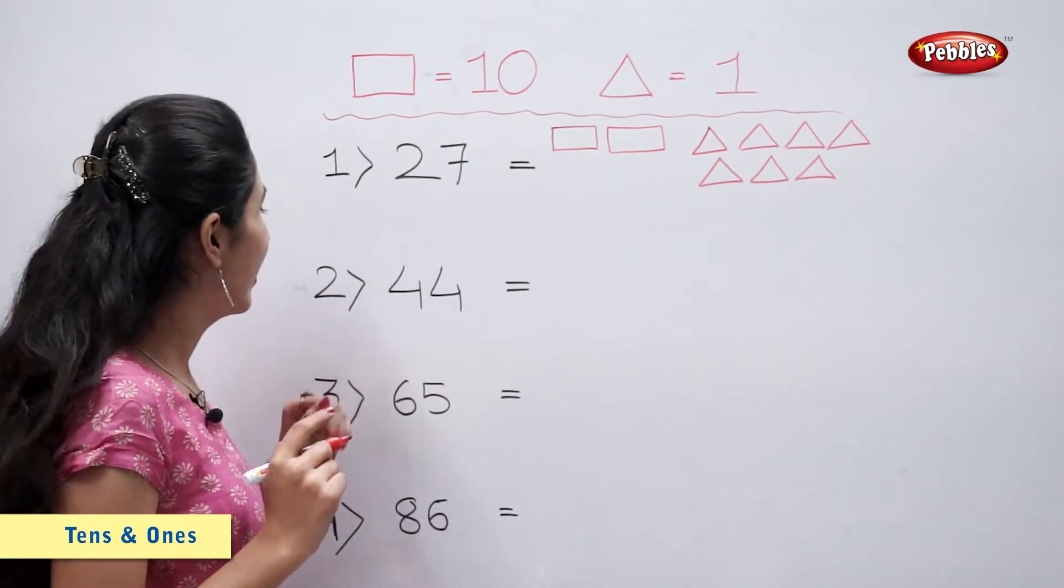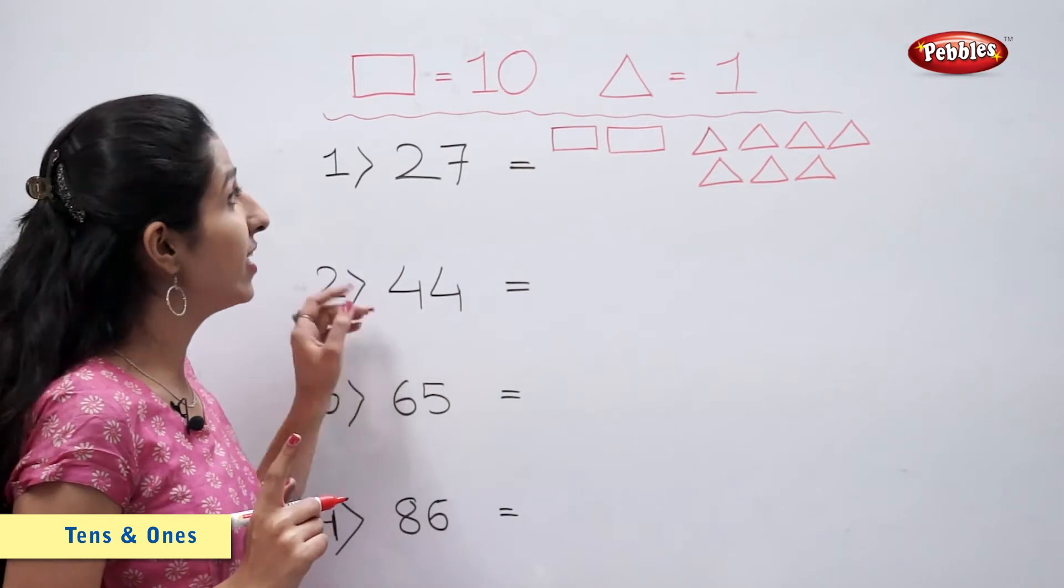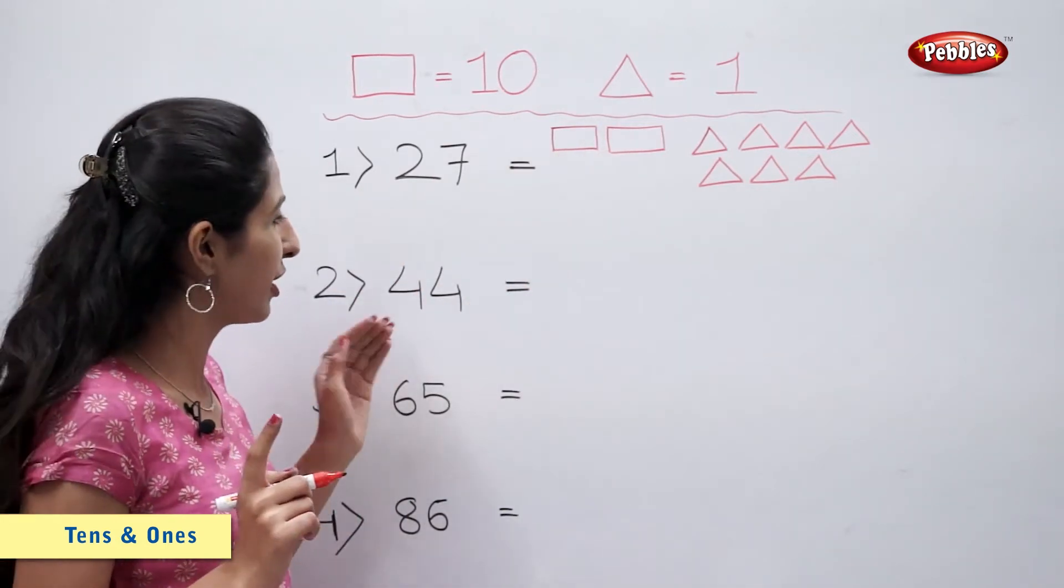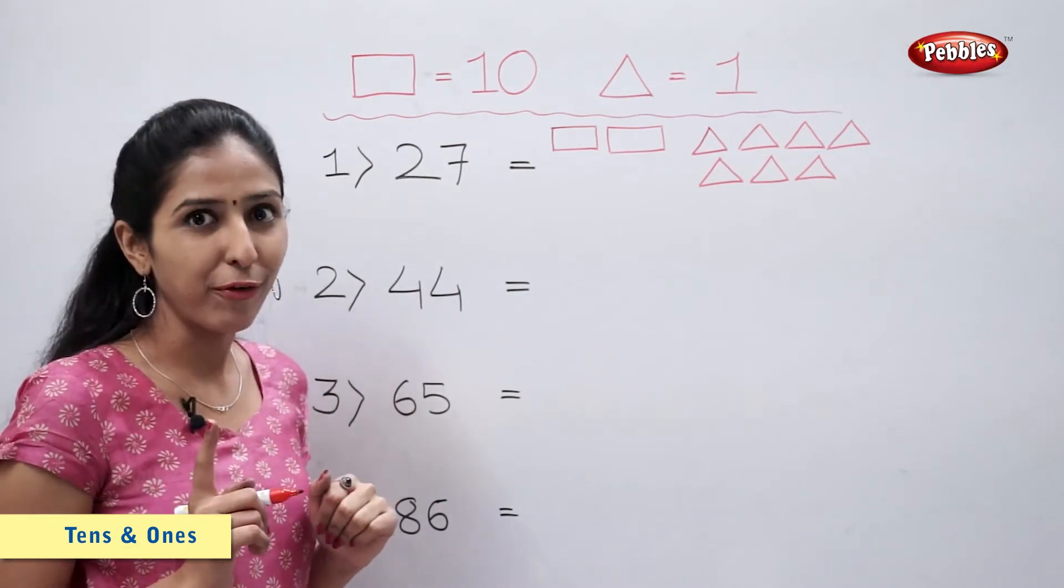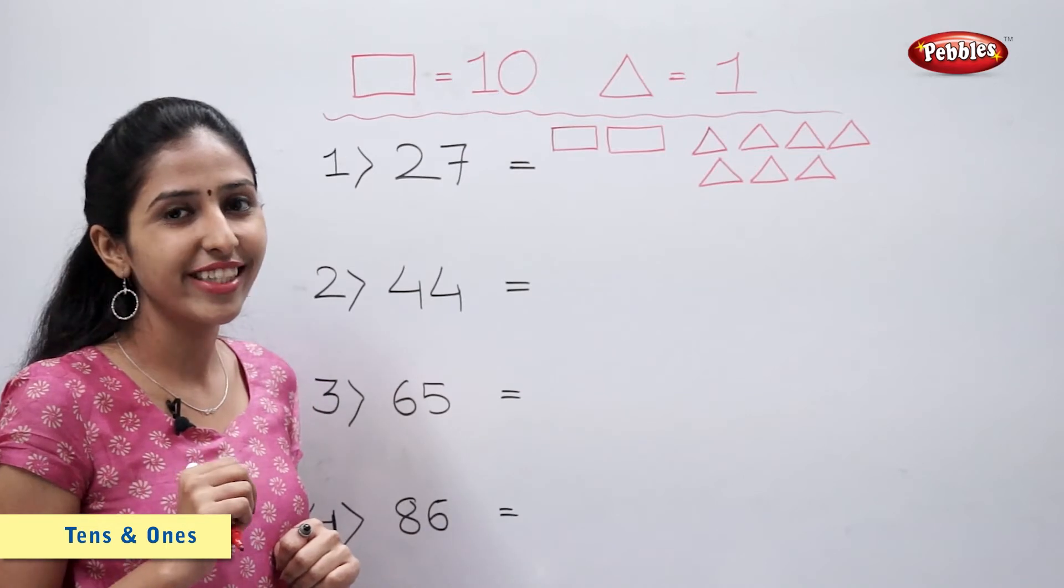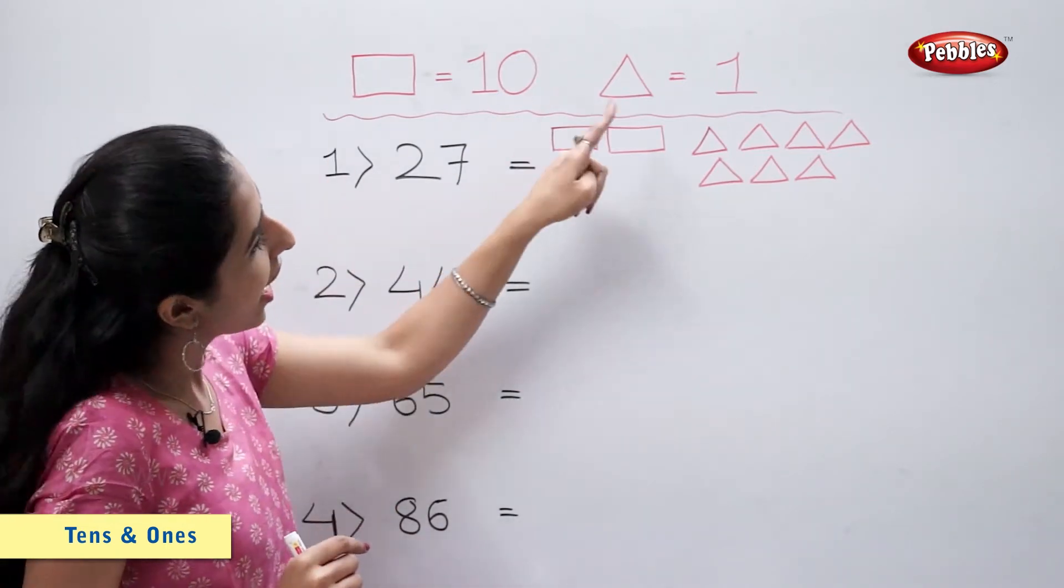Now number 44. Tell me students, how many rectangles and triangles are required to make number 44? 44 is 4 tens and 4 ones, so 4 rectangles and 4 triangles.